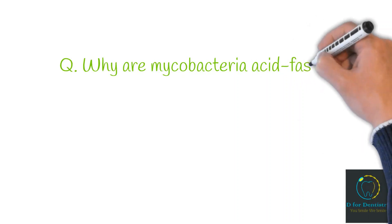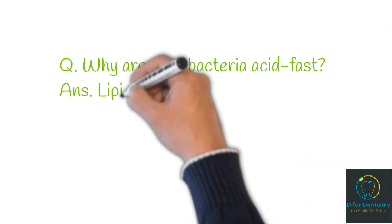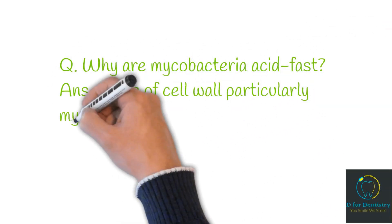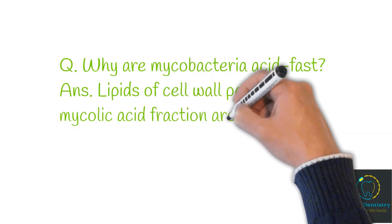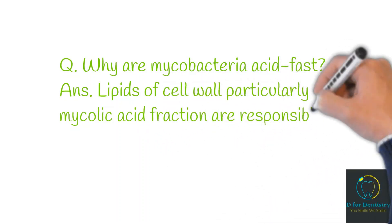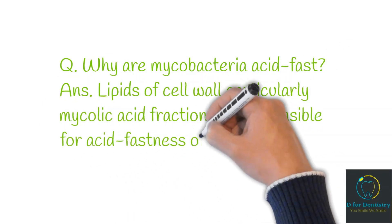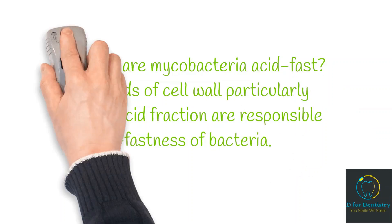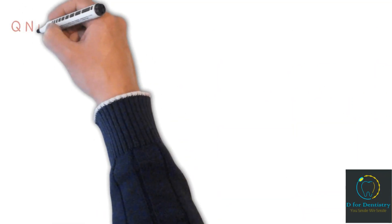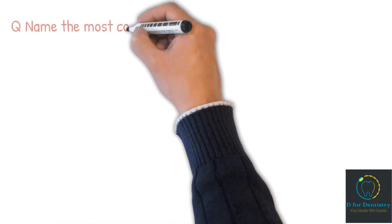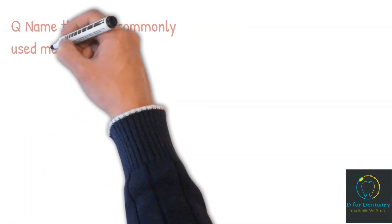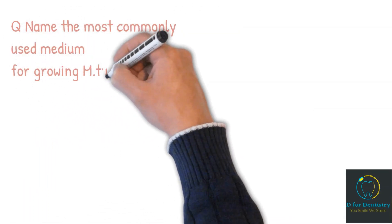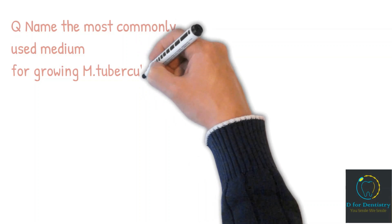Question: Why are mycobacteria acid fast? Answer: Lipids of the cell wall, particularly mycolic acid fractions, are responsible for the acid fastness of bacteria. Question: Name the most commonly used medium for growing Mycobacterium tuberculosis. Answer: Lowenstein-Jensen (LJ) medium.